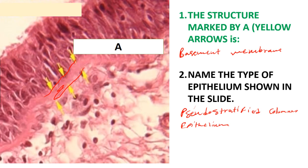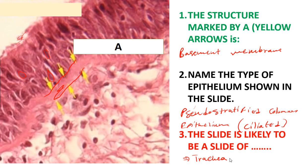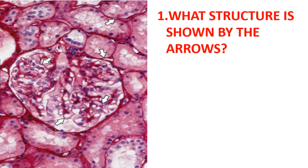This type of epithelium has nuclei which are not on the same level — if you look at the different nuclei, they are at different levels. As I mentioned, this epithelium is likely that of the trachea, which means it is also ciliated. If you look at the uppermost part, it contains some cilia. This slide is likely that of the trachea — remember that pseudo-stratified columnar epithelium is mostly found in the respiratory tract.